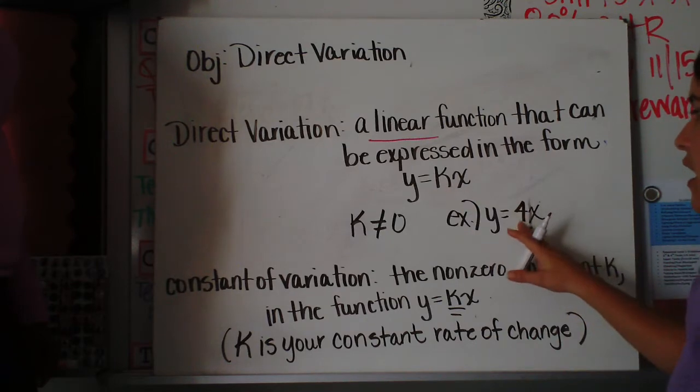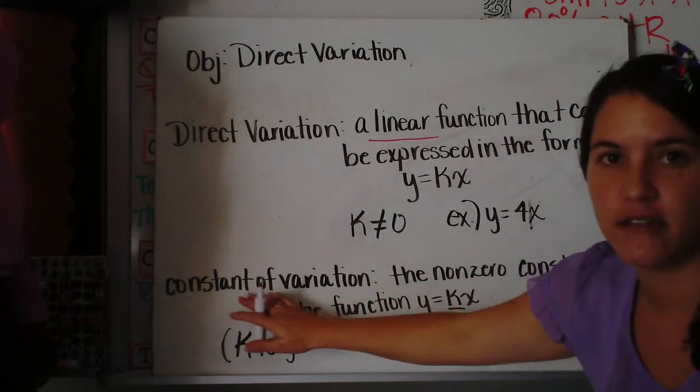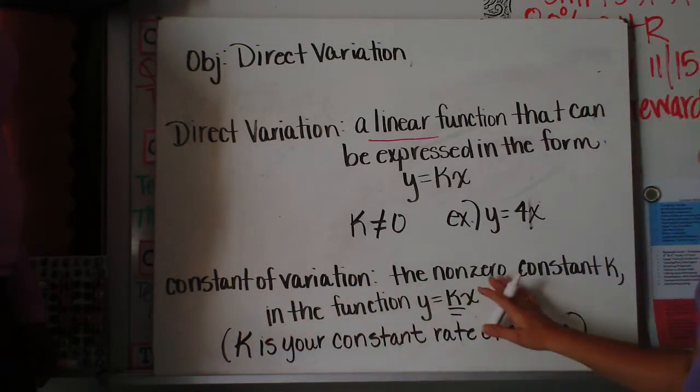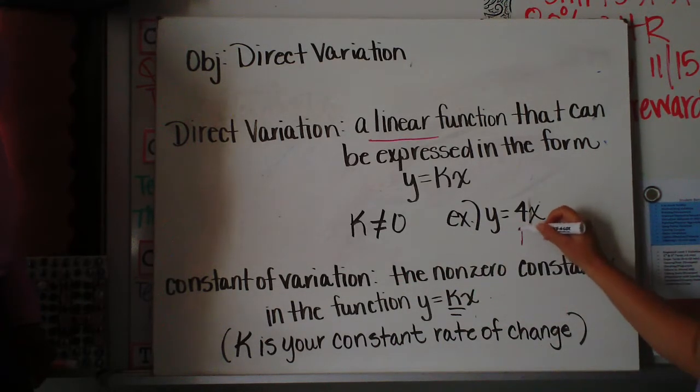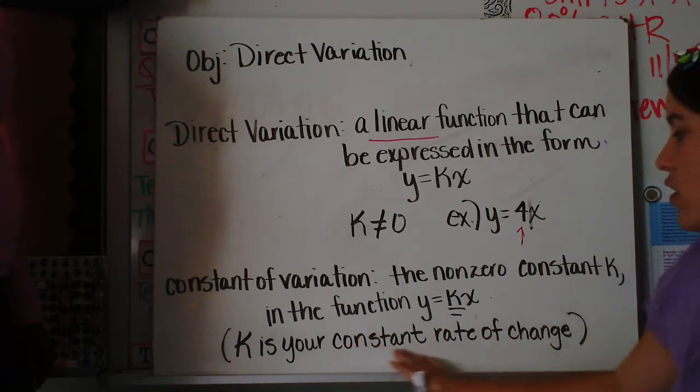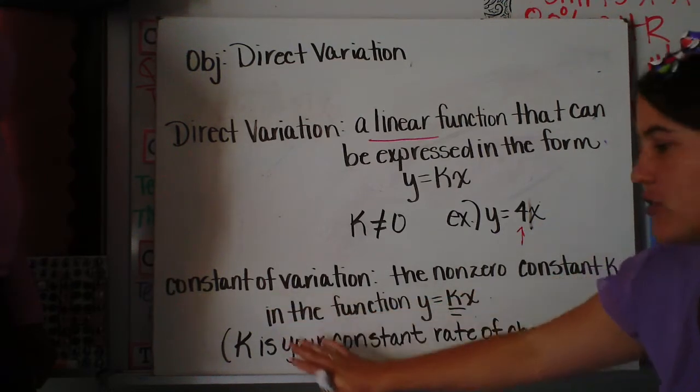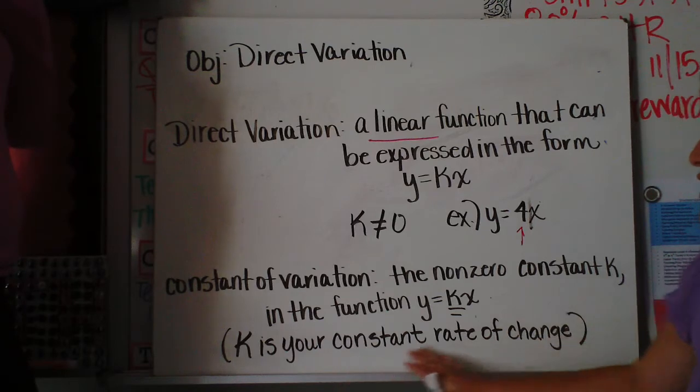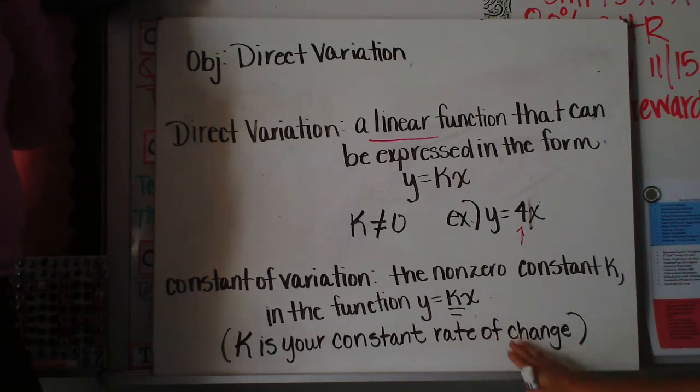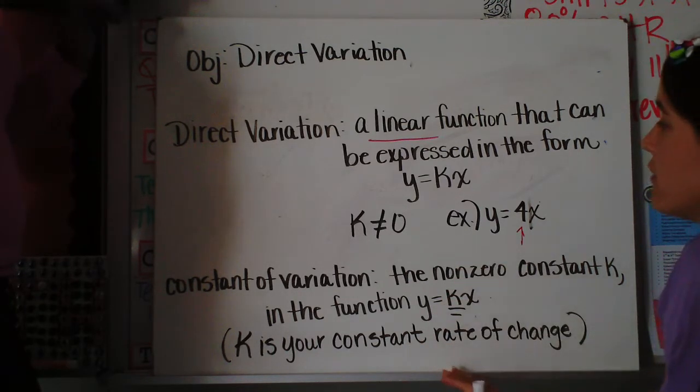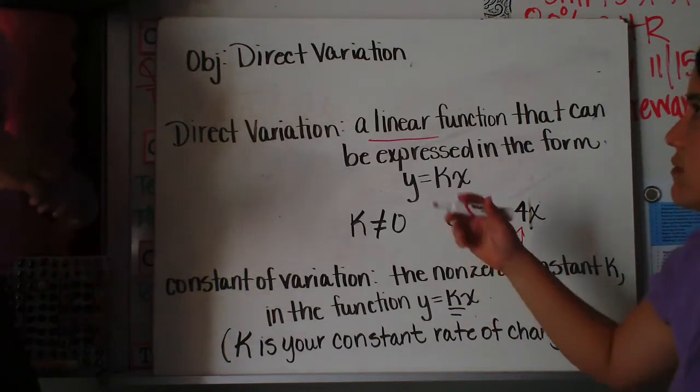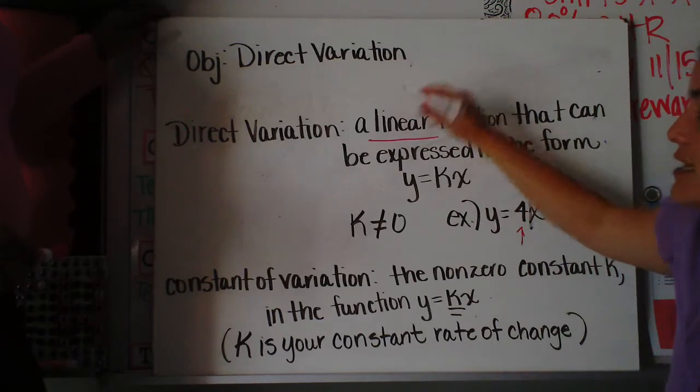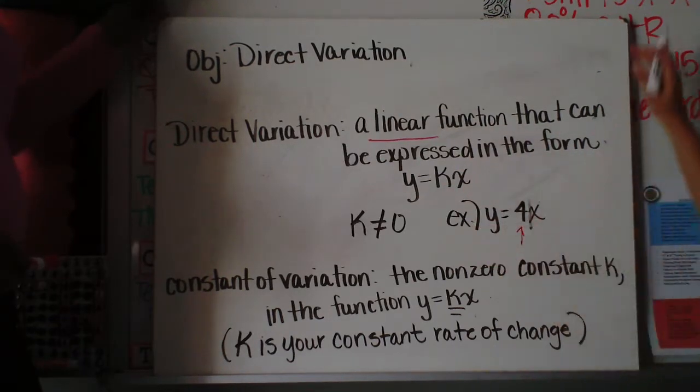So the k is what's called your constant of variation. And that's the non-zero constant in the form y equals kx. So in this example, the 4 is your constant of variation. It's also going to be your constant rate of change, like we've been talking about rate of change. Make sure you understand this is a linear function, so it's going to be a straight line.